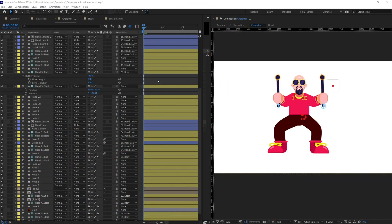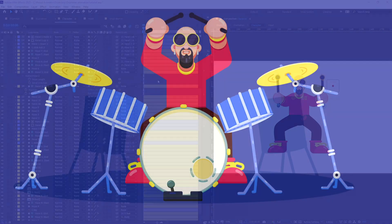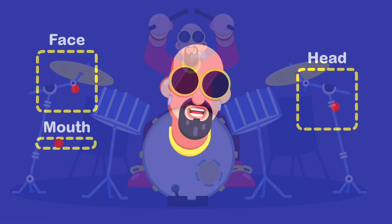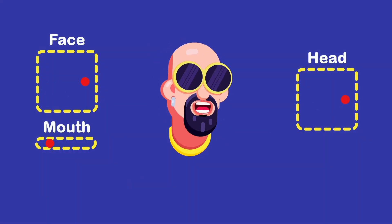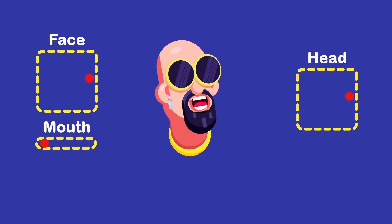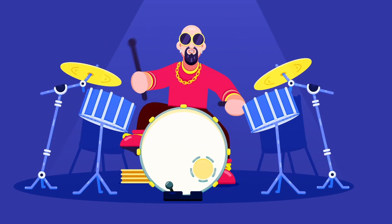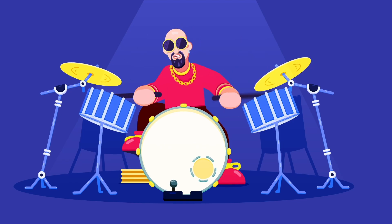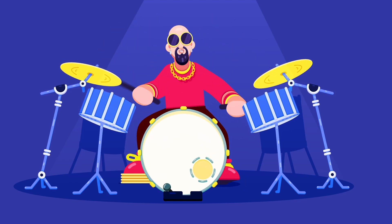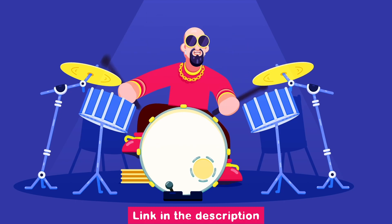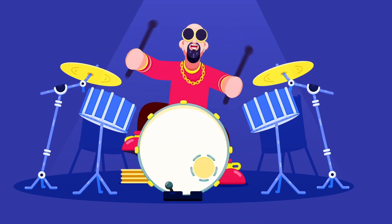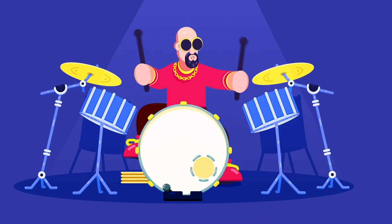Till now we have first of all illustrated our drama in flat style, then we have rigged the face of the character using Twig Basil, and right now we are going to animate this character. If you have missed the previous lessons on this project, do check them out — you will get the links in the description. Let's proceed with this animation process.